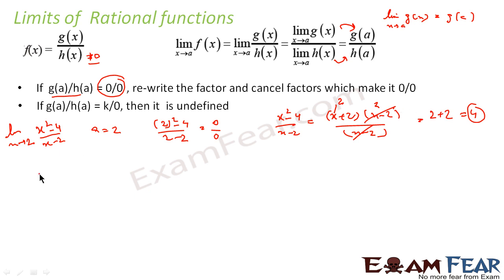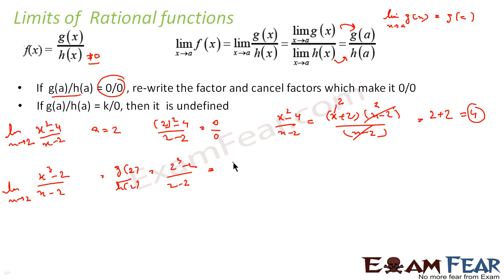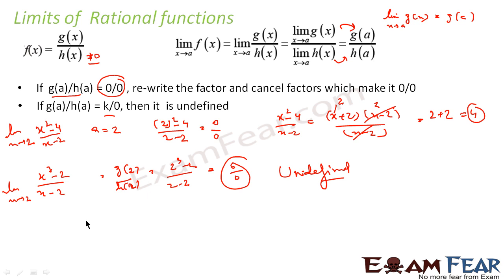We will take one more example. Suppose we have the function (x³ - 2) by (x - 2), and we have to find the limit at x = 2. So we put g(2) by h(2), which equals 2³ - 2 by 2 - 2, that is 6 by 0. Since this is k by 0 form, the limit of this function at x = 2 is undefined.